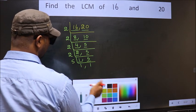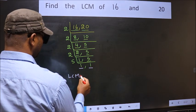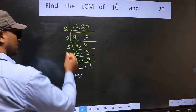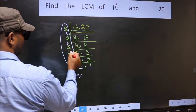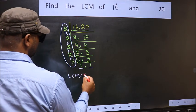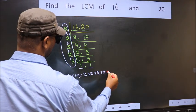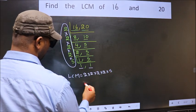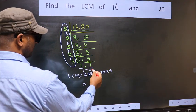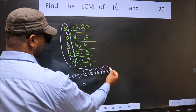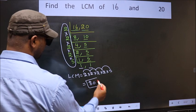So we got 1 in both places. The LCM is the product of these numbers — that is 2 × 2 × 2 × 2 × 2 × 2 × 5. Let us multiply these: 2 × 2 = 4, × 2 = 8, × 2 = 16, × 5 = 80. So 80 is our LCM.